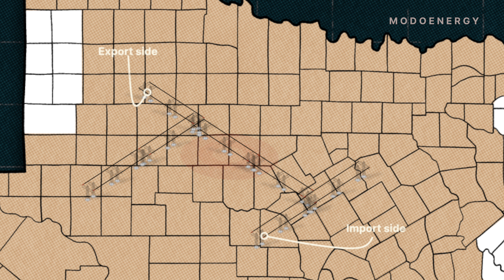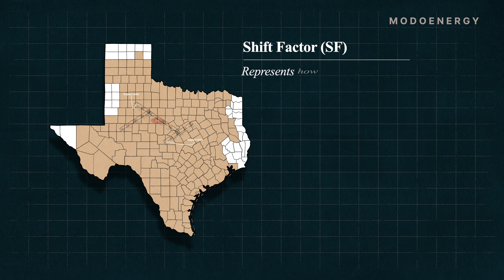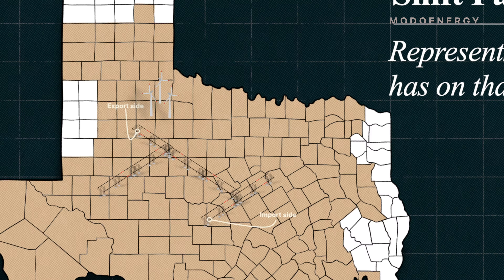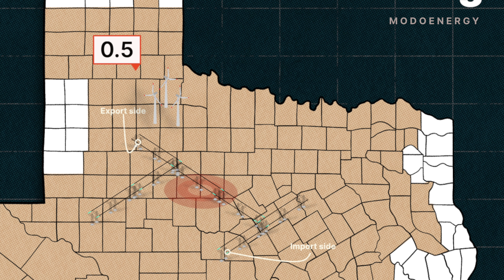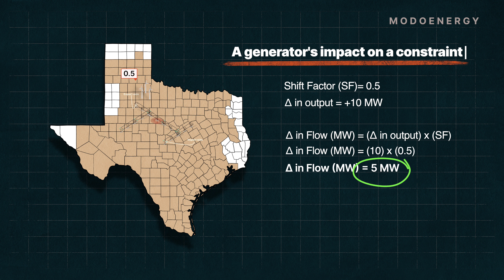For any constraint, every generation or load resource in ERCOT has what is known as a shift factor. This shift factor represents how much impact that resource has on the constraint. For example, imagine a generator close to the export side of a constraint — it might have a shift factor of 0.5, or 50%. If it increases its output by 10 MW, the flow across the constraint would increase by 5 MW.